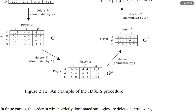We delete G, dominated by F. Then we have a 3×2 grid where player 1 has strategies A, B, C and player 2 has strategies E and F. That is G³.